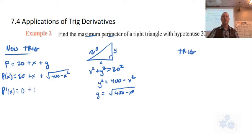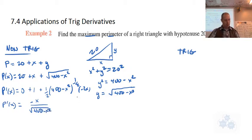The derivative of 20 is 0, the derivative of x is 1, and the derivative of this is going to be 1/2(400 - x²)^(-1/2) times -2x when you do the power rule and the chain rule. Simplified, this is -x/√(400 - x²) + 1.